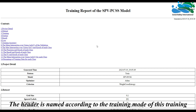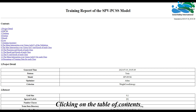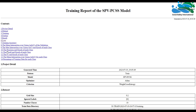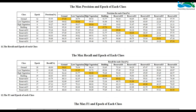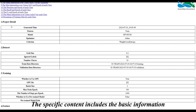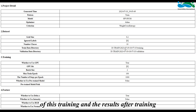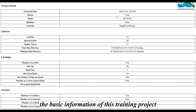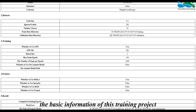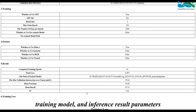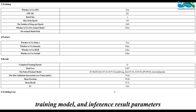The header is named according to the training mode of this training. Clicking on the table of contents will take you to the corresponding location. The specific content includes the basic information of this training and the results after training. The project details table records the basic information of this training project, including the parameter settings for data preparation, training model, and inference results parameters.